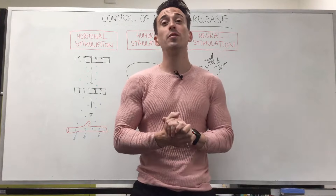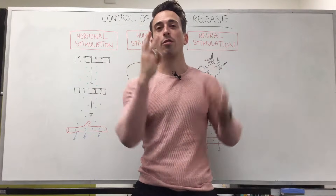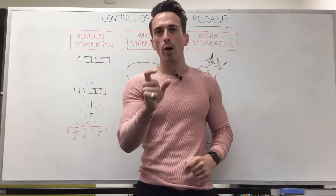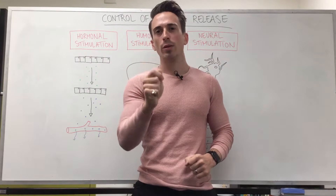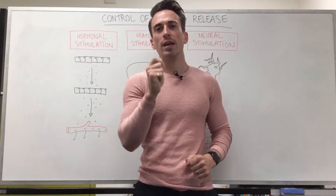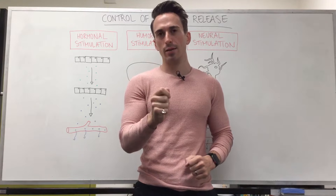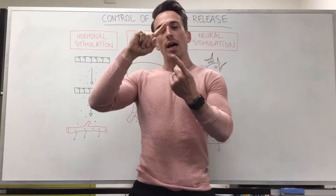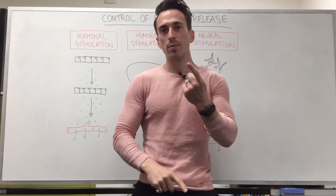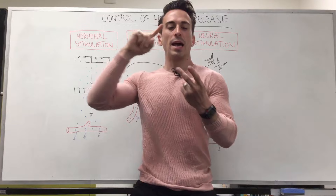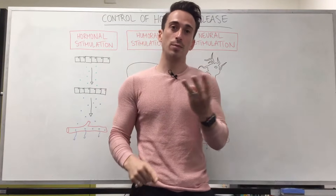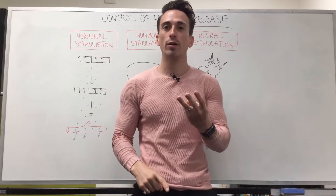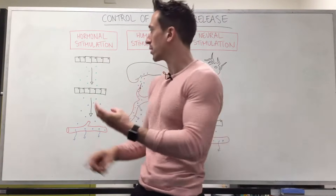Hi everyone, Dr. Mike here. In this video we're going to talk about the three different ways that hormones can be released from their glands and cells. The three different ways are hormonal stimulation, humeral stimulation, and neural stimulation. Let's have a look at these three and go through some examples.